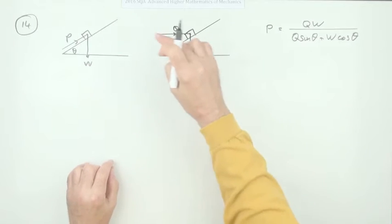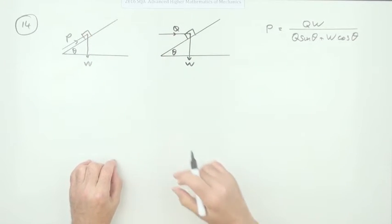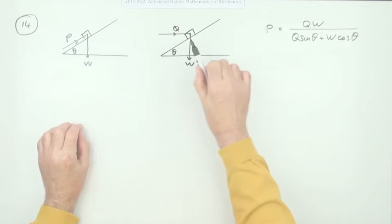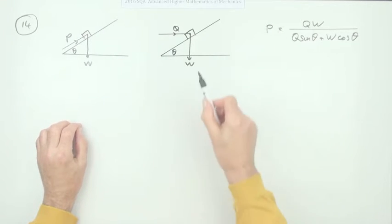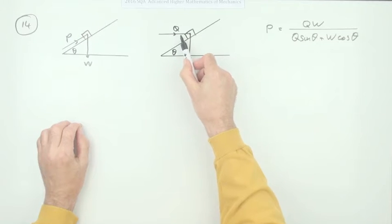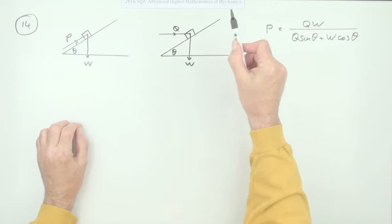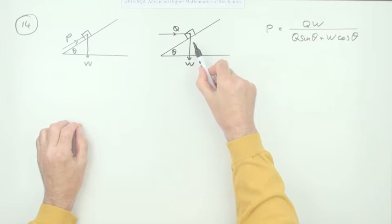What's different would be the normal reactions and the actual force of friction. In this one with a component of Q pressing the block down onto the slope, the normal reaction is actually going to be greater than that one.